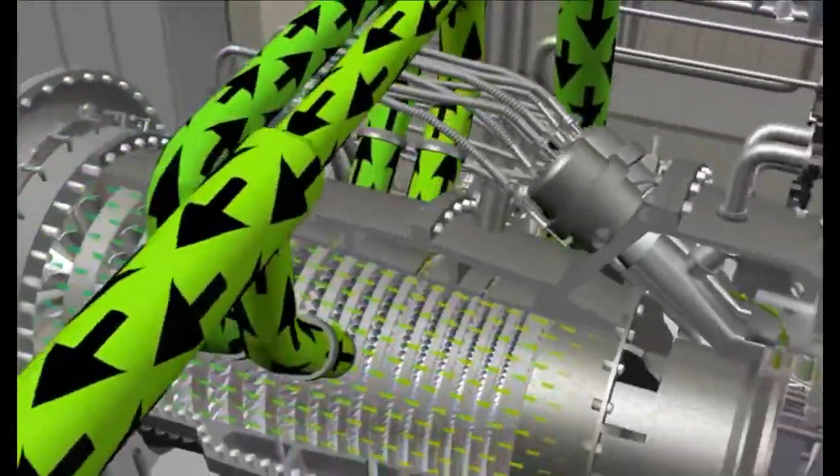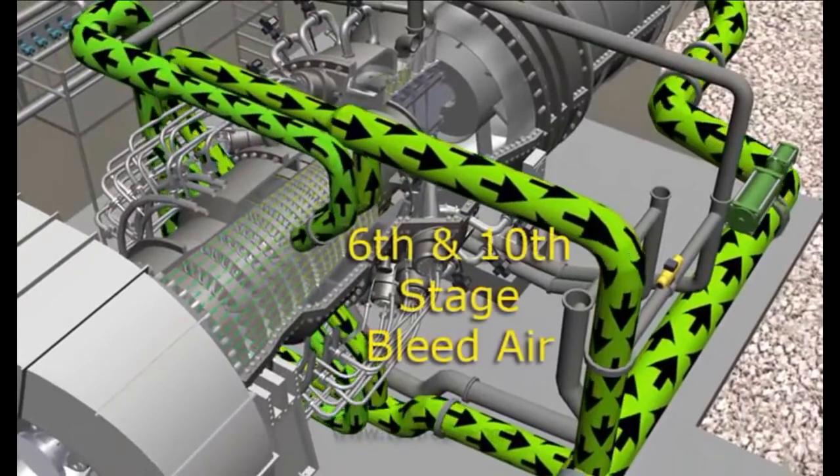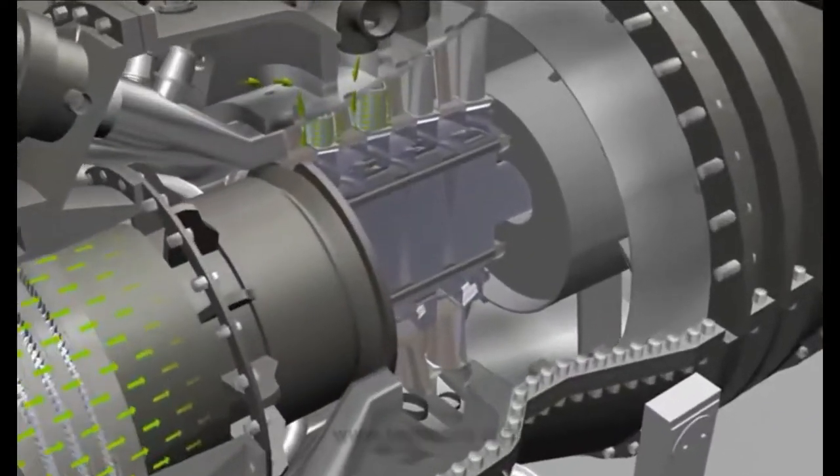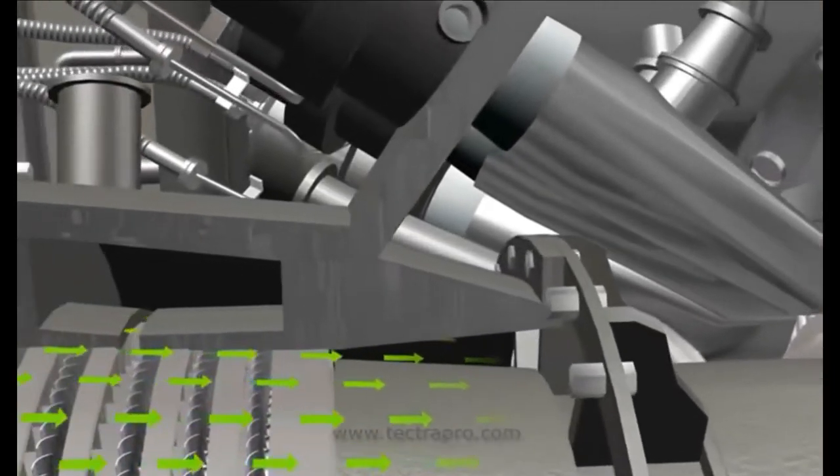After the rotor has accelerated to a speed where surging is no longer a concern, the sixth and tenth stages of compressor air bleed to the turbine exhaust is closed. From this point, sixth and tenth stage bleed air is directed to cool the last stage stationary blades of the power turbine.